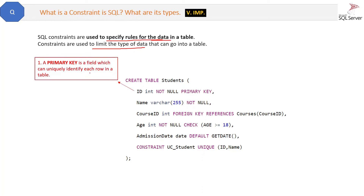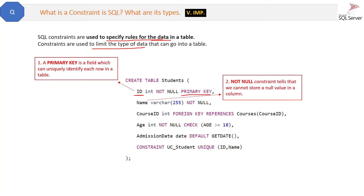The first constraint is the primary key constraint. A primary key is a field which can uniquely identify each row in a table. We have applied the primary key constraint on the ID column. The second constraint is the NOT NULL constraint — it tells us that we cannot store a null value in a column. Here in the second column we have applied NOT NULL, so the name column cannot be null at any point of time. If you try to insert a null value, it will throw an error.